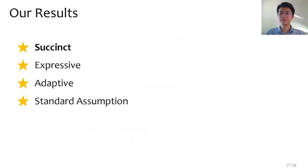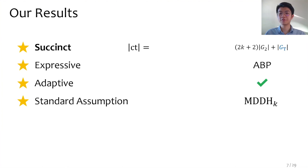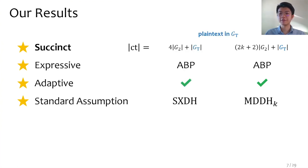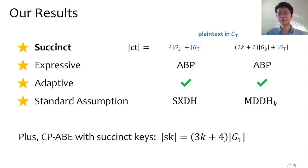In this work, we obtain succinct ABE that supports expressive policies, enjoys adaptive security, and is based on a standard assumption. Our scheme is based on the matrix decisional Diffie-Hellman assumption in pairing groups, which is implied by the k-linear assumption. It supports policies represented by arithmetic branching programs, and the ciphertext size is 2k+2 source group elements and one target group element. If we instantiate based on SXDH (k=1), the ciphertext is just four source group elements plus one target group element. The plaintext space is the target group, easily extended to handle arbitrary messages. We also consider ciphertext policy ABE, where our CP-ABE has succinct keys consisting of 3k+4 source group elements when based on MDDH_k.